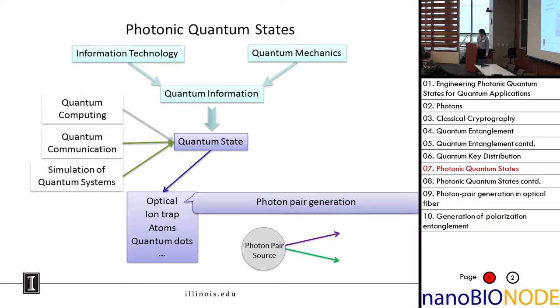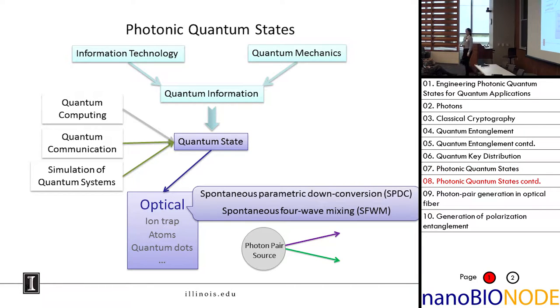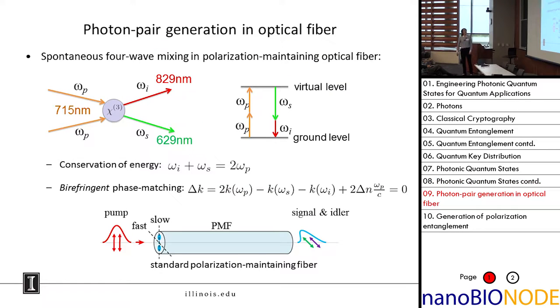The most common way of generating photons in this case is actually in pairs. This is called photon pair generation. You have a photon pair source and you get two photons out. There are two ways of doing that: spontaneous parametric down conversion, which was pioneered by Paul Kwiat, who is a professor here in the physics department, and what we're using is spontaneous four-wave mixing.